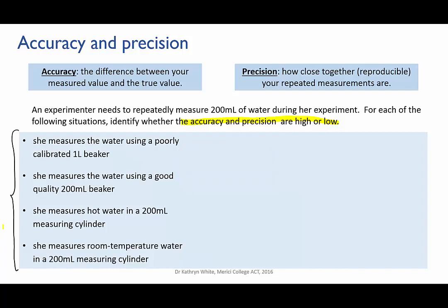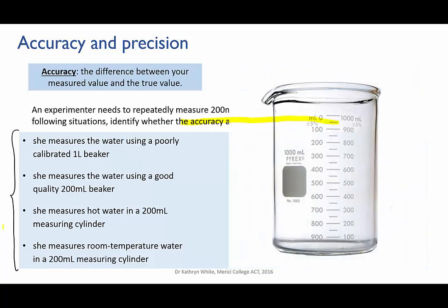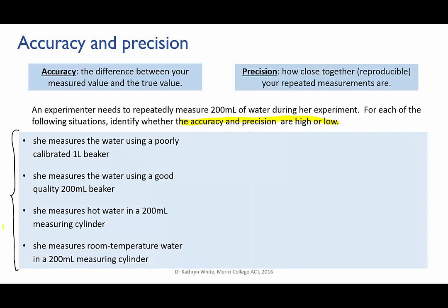Let's go through them. In the first situation, she uses a one liter beaker to measure her 200 mils, and it's a cheap, poorly calibrated one at that. Measuring 200 mils in a one liter beaker is difficult because the gradations are far apart, and the beaker is so wide that small differences in the height of the water translate to a large difference in the volume. Sometimes the volumes will be a bit above the 200 mil mark, and sometimes they'll be below. So that means a large random error, and hence the precision is going to be low.